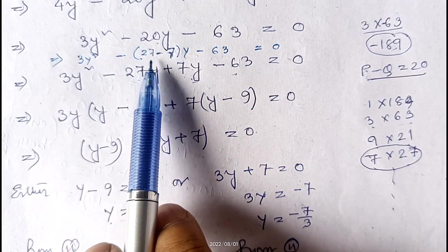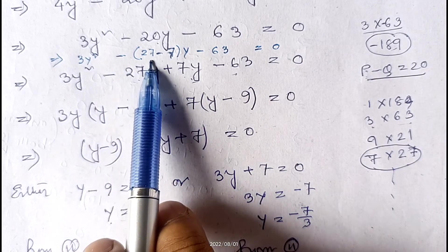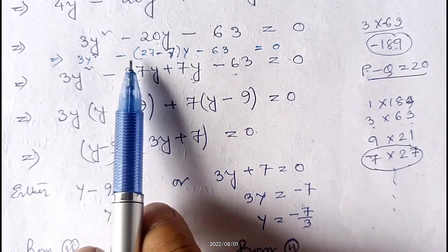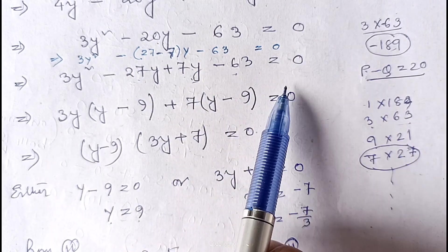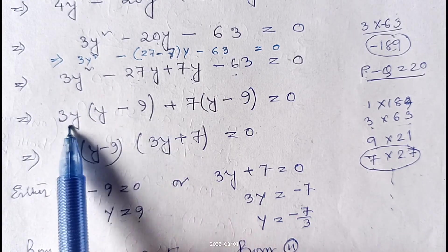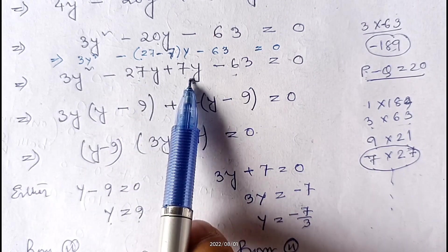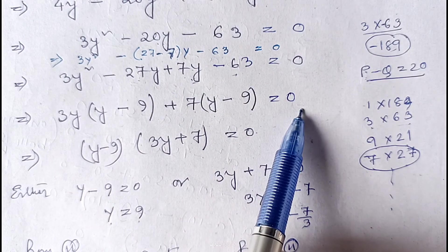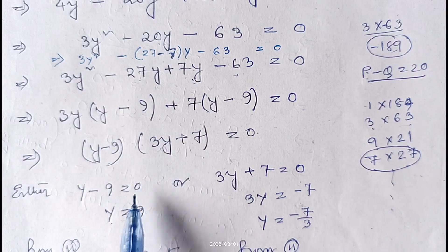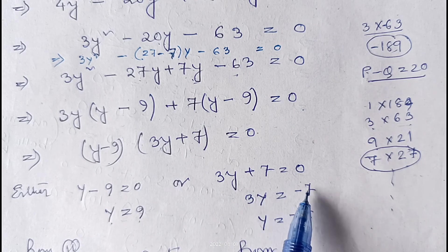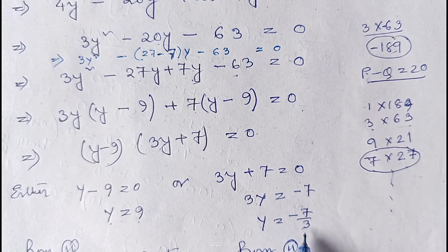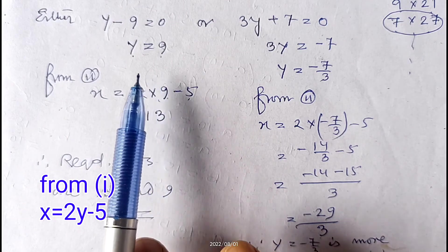So instead of −20y we write −27y + 7y. The equation becomes 3y² − 27y + 7y − 63 = 0. Taking 3y common from the first two: 3y(y − 9). Taking 7 common from the last two: 7(y − 9) = 0. Taking (y − 9) common: (y − 9)(3y + 7) = 0. So either y − 9 = 0, giving y = 9, or 3y + 7 = 0, giving y = −7/3.